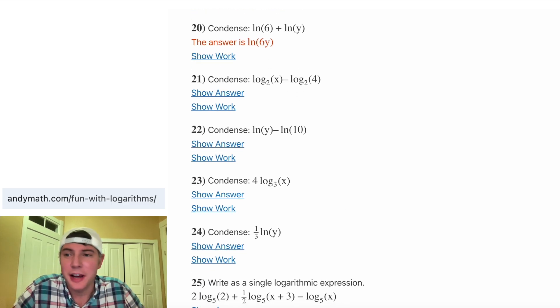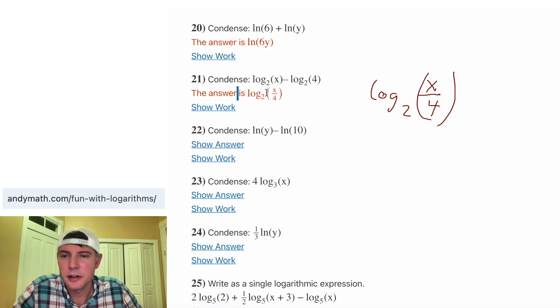And then if we go on to 21, now we have a subtraction. So we'll still write it as a single log base 2 because it matches this log. But now we're going to be dividing where the x is on top and the 4 is on bottom. So the answer should be log base 2 of x over 4. And there it is right there.